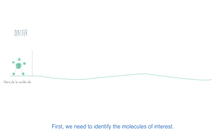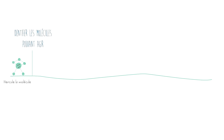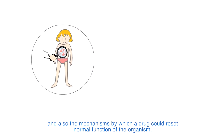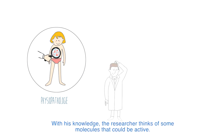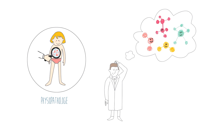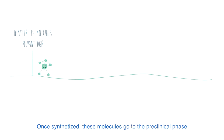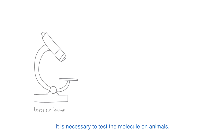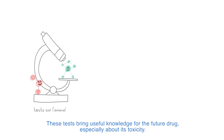First, we need to identify the molecules of interest. It starts with the understanding of the disease, its clinical and biological signs, and also the mechanisms by which a drug could reset the normal function of the organism. With this knowledge, the researcher thinks of some molecules that could be active. Once synthesized, these molecules go to the preclinical phase. After performing different tests at the laboratory and before turning to human beings, it is necessary to test the molecules on animals. These tests bring useful knowledge for the future drug, especially about its toxicity.